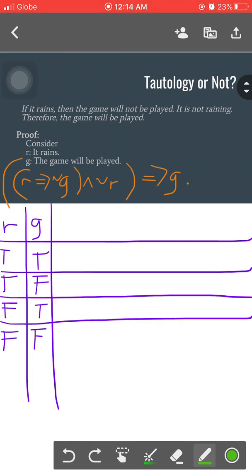Just like in my previous video for this topic, we have to check first the innermost propositional forms to know what the next column heading is. The innermost propositional form here would be this implication: r implies not g.